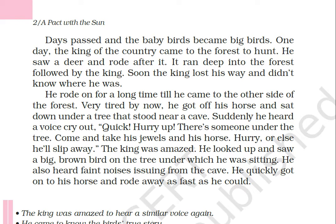The king saw a deer — usne hiran dekha — and he chased it, riding after it. He started running after that deer — usne hiran ke piche lag gaya. The deer ran deep into the forest, followed by the king — aur hiran jungle mein chala gaya, aur raja bhi piche gaya.